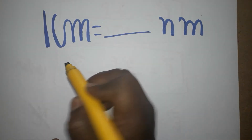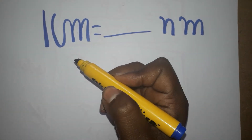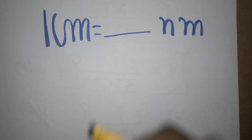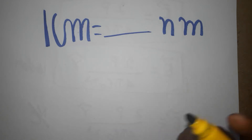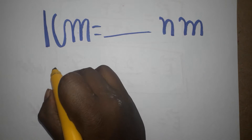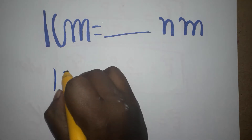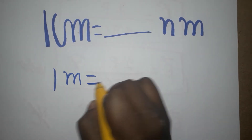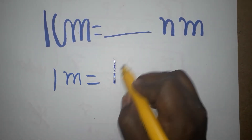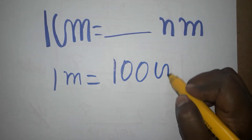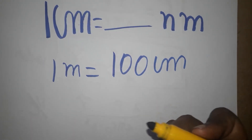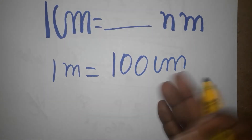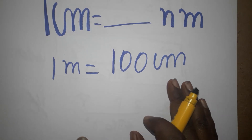Today we are going to learn: one centimeter is equal to how many nanometers — how to convert one centimeter to nanometers. If you like my channel, please subscribe. First, we learn one meter is how many centimeters. One meter is 100 centimeters. You can see this on a normal ruler.